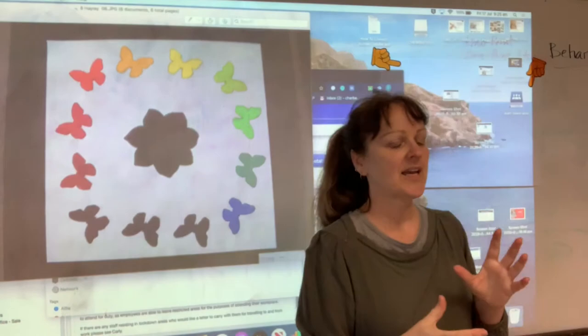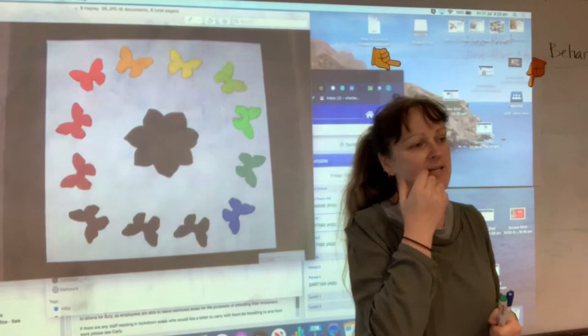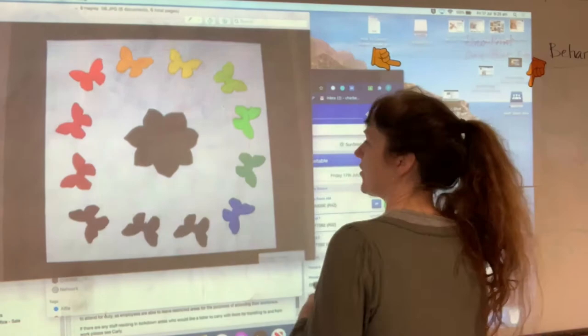Okay, so what we're going to be having a play with today and for the next couple of weeks is having a go at learning different color schemes. And how we're going to do that is I'm going to get you to have a play at creating a color wheel. A color wheel, for this particular exercise, is going to be made up of 12 sections. So you can see here we've got a color wheel on us.